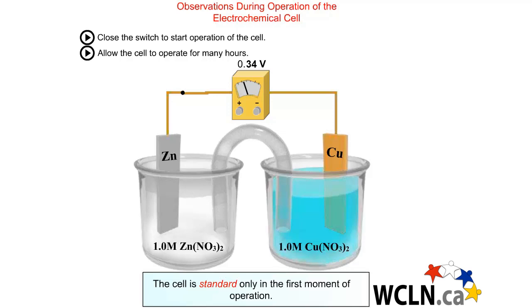When you start the operation of the cell, you will see that the voltage rises to 0.34 volts. This is the standard voltage for this cell.